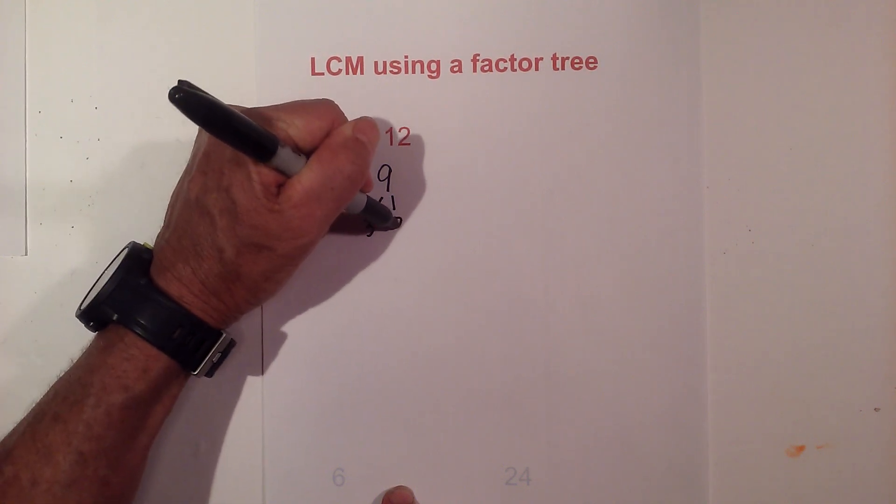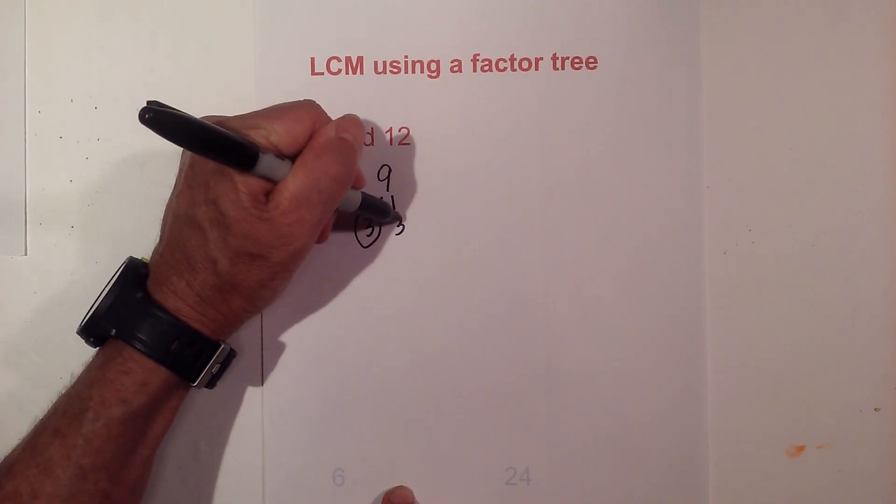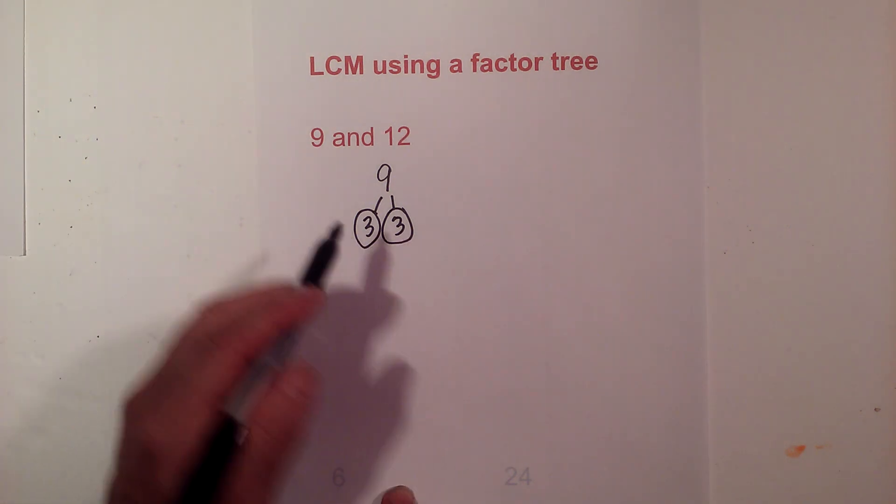So let's find all the prime numbers of 9. I know 3 times 3 equals 9. Circle the 3 and the 3 because they are both prime. So now I am finished.